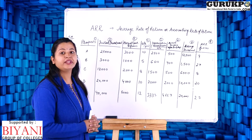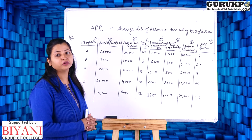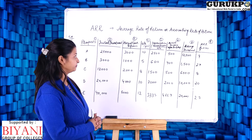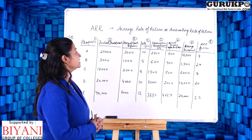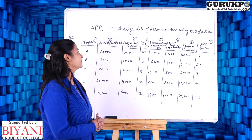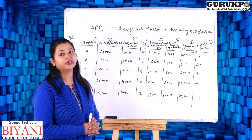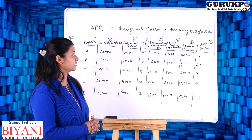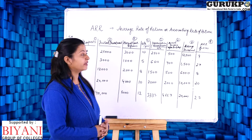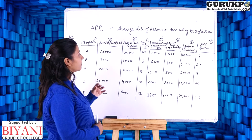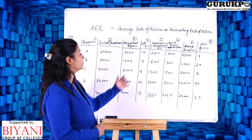Now we have to calculate the average rate of return from this data. The annual cash flow means annual profit after tax but before depreciation, so we will first calculate the depreciation amount and then deduct it from the annual cash flow.